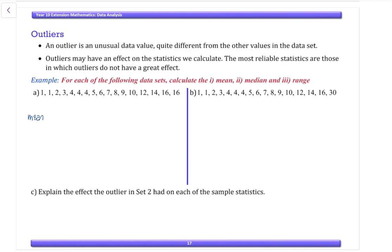So the data is in order, which is lovely. So our mean is equal to our sum of our scores over n. So if we add up all that data: 1 plus 1, plus 2, plus 3, plus 4, plus 5, plus 6, plus 7, plus 8, plus 9, plus 10, plus 12, plus 14, plus 16. That's 122, and there's 17 pieces of data. So our mean is approximately 7.18.